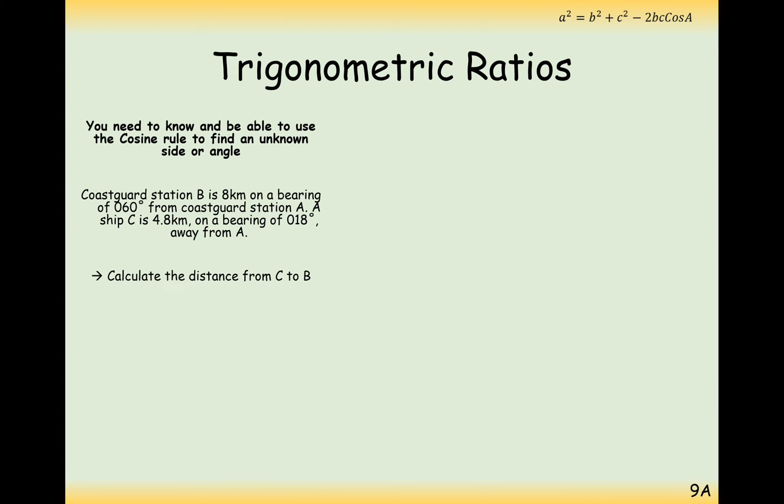Okay, we can also use the cosine rule within a bearings question. So what we have here is a question where the Coast Guard Station at B is 8 kilometers on a bearing of 60 degrees from Coast Guard Station A. A ship C is 4.8 kilometers on a bearing of 18 degrees away from A. So our center of reference point here is the Coast Guard Station at A and we want to calculate the distance from C to B. So we need to draw a diagram with a north line. The first thing we're told is that Coast Guard Station B is 8 kilometers away on a bearing of 60 degrees.